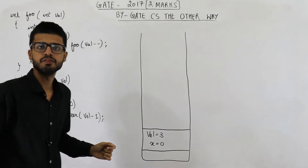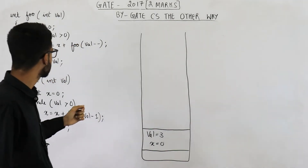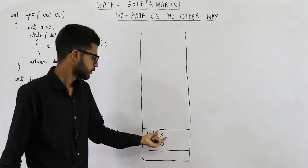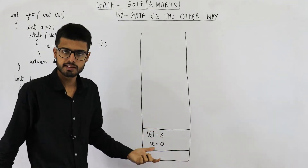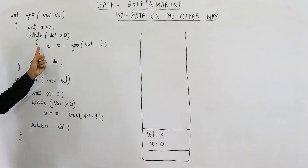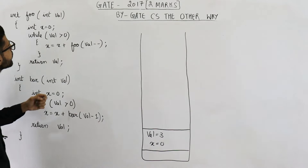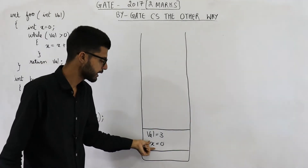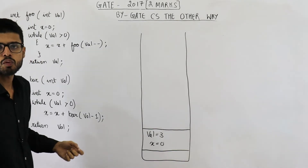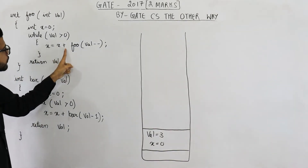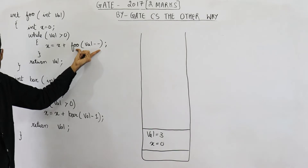In the next line you can see we have written a while loop. The condition of this loop is val is greater than zero. Val, which is three, is actually greater than zero, that means the condition is true. So because the condition is true we are going to execute this line. In this line we are trying to update the value of variable x. The new value that we want to assign to it is the current value plus whatever is returned by this function call.